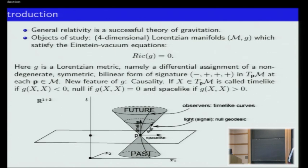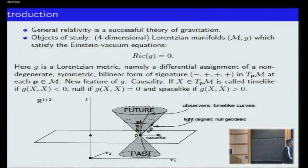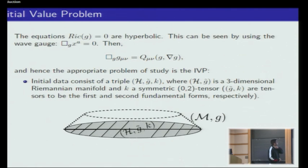At each point, in the tangent space, vectors which are outside the cone have positive norm. The vectors which are on this cone have zero norm, and the vectors which are inside the cone have negative norm. These inside vectors are called time-like; the cone vectors are the null vectors; and the outside vectors are space-like. These are the basic notions we need from Lorentzian geometry.